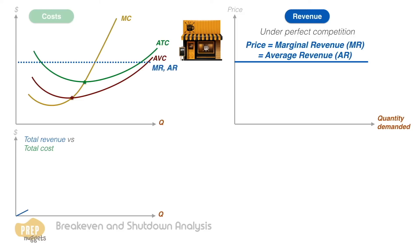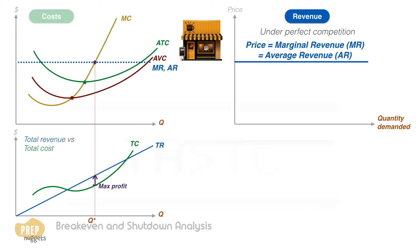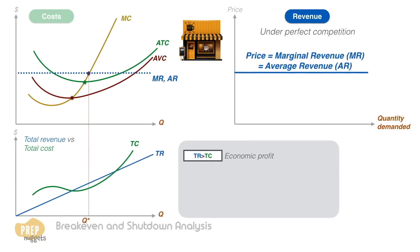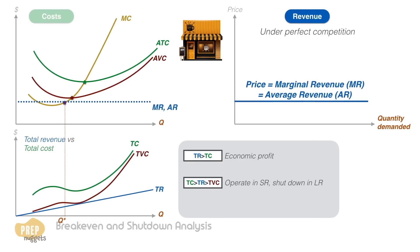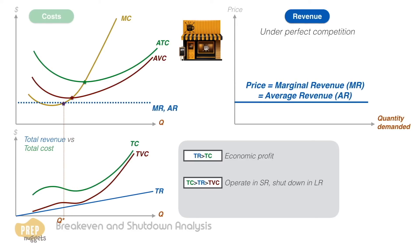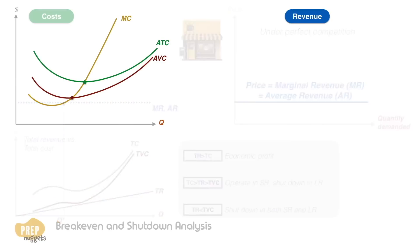Another way to study the problem is to look at total revenue versus total cost. If the demand curve is horizontal, the total revenue curve will be an upward sloping straight line. A typical total cost curve will look something like this. If demand is lower such that the total revenue curve is below the total cost curve, no economic profit can be made. However, if total revenue is still higher than total variable cost, the firm should continue operating in the short run but shut down in the long run. If demand is even lower and revenue cannot cover variable costs, the firm should shut down in both the short run and long run.